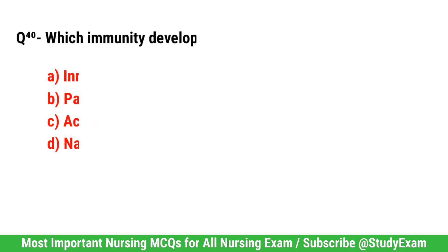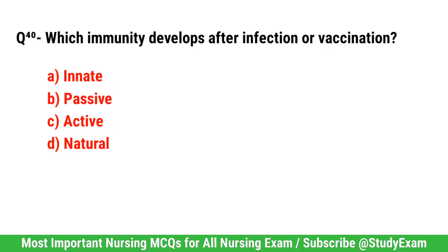Question number 40. Which immunity develops after infection or vaccination? Correct option is C. Active.